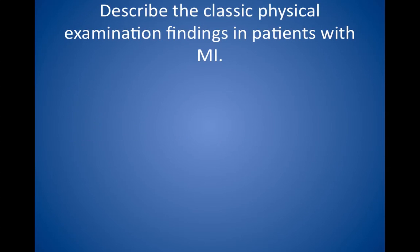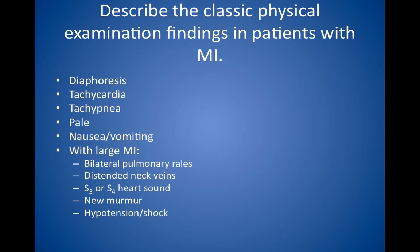Describe the classical physical examination findings in a patient with myocardial infarction. Patients are often diaphoretic, anxious, tachycardic, tachypneic, and pale. They may have nausea and vomiting. With large heart attacks that cause heart failure, look for bilateral pulmonary rales in the absence of other pneumonia-like symptoms. You can also see distended neck veins, an S3 or S4 heart sound, new murmur, hypotension, and/or shock.